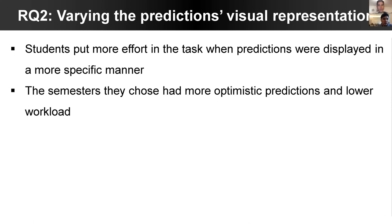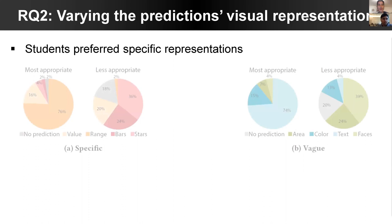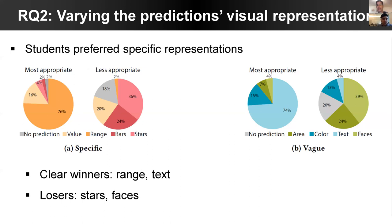We also looked at students' preferences and found clear winners and losers. On the specific side of the spectrum, students preferred a range representation as they deemed it more credible, even over a punctual prediction. On the vague side of the spectrum, they rated text as the most simple and easy-to-understand visualization.